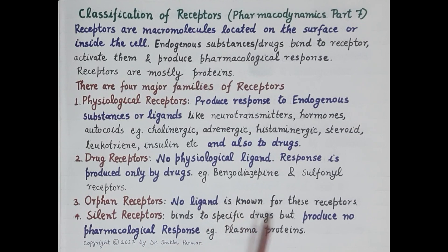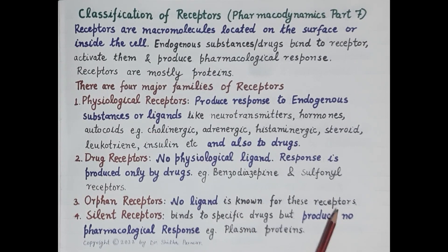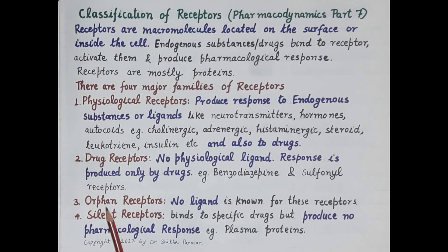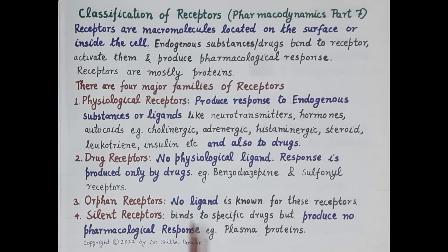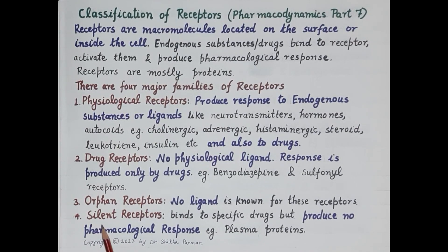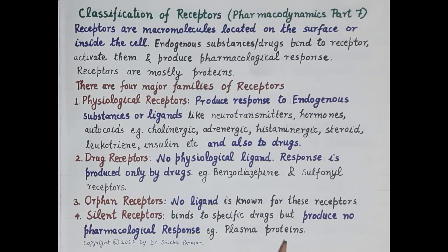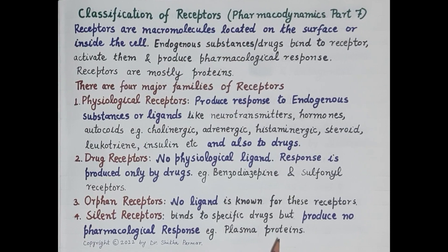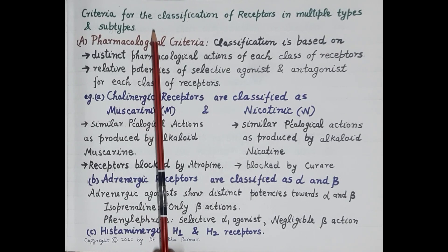Response is produced only by drugs, and therefore these are called drug receptors — for example, benzodiazepine receptors and sulfonylurea receptors. Another type are orphan receptors, for which no ligand is known, neither endogenous substances nor drugs. Then there are silent receptors, which bind to specific drugs but produce no pharmacological response — for example, plasma proteins, which bind to certain substances but produce no pharmacological response.